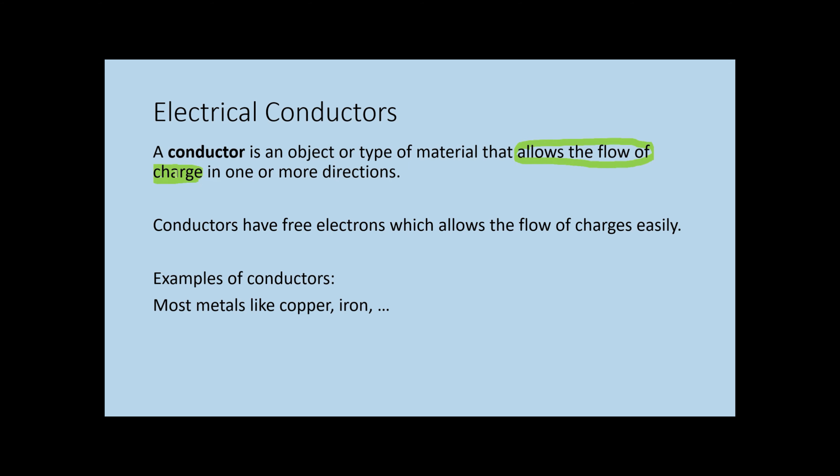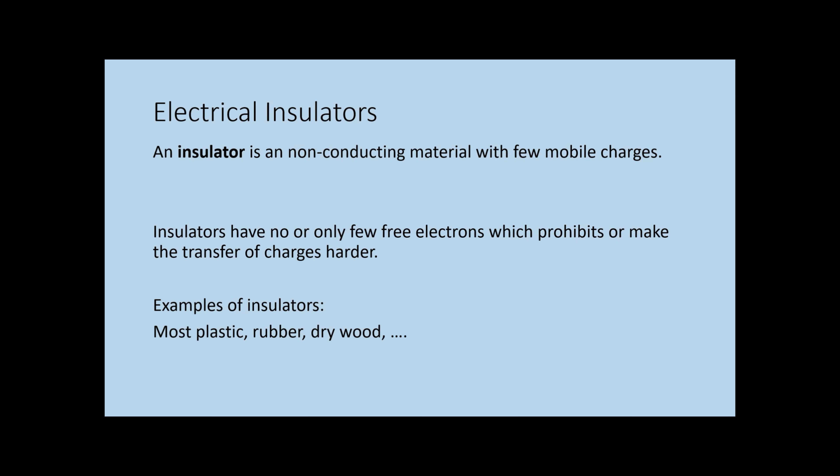So some of them are considered to be good conductors and others are considered to be poor conductors. Examples of conductors: copper, iron, aluminum, tungsten, most metals.